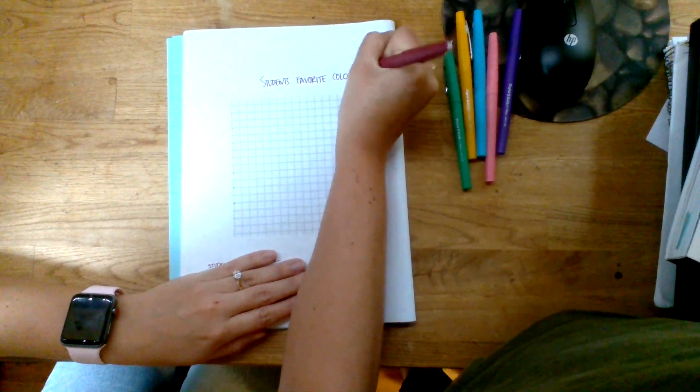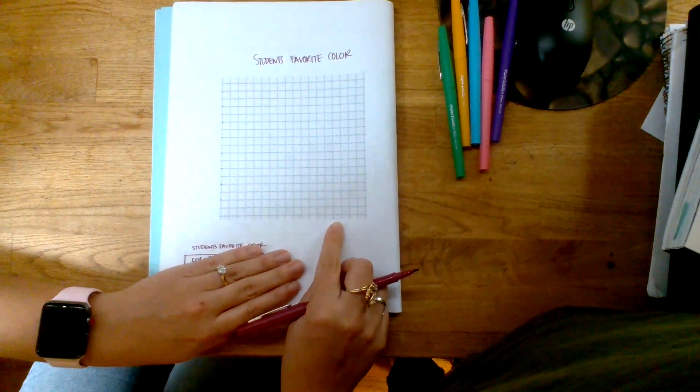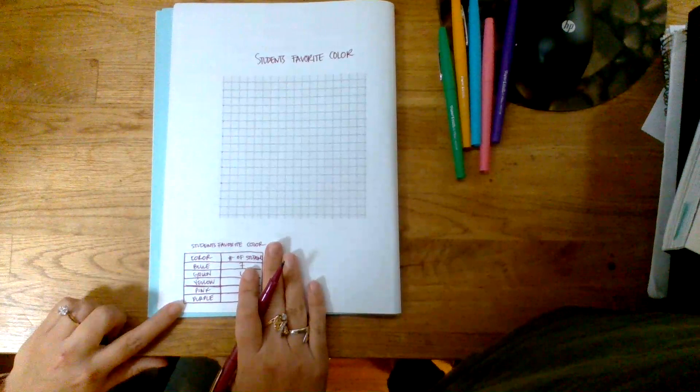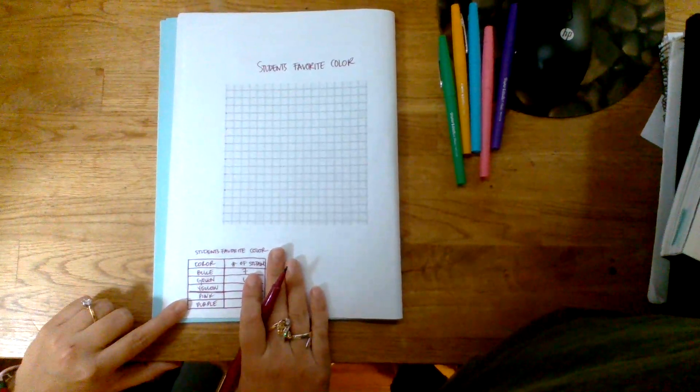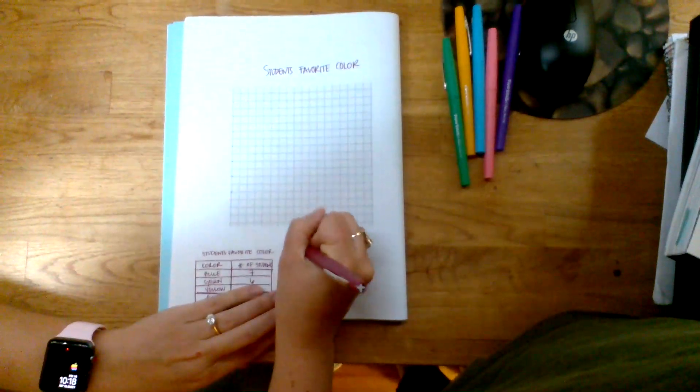Then we want to title our x-axis. On the x-axis, you always put the independent variable. That's the variable that the scientist is in charge of. In this case, those are the color choices that we had to choose from. I picked those colors, so that's what I was in charge of. This is going to be 'color' down here.